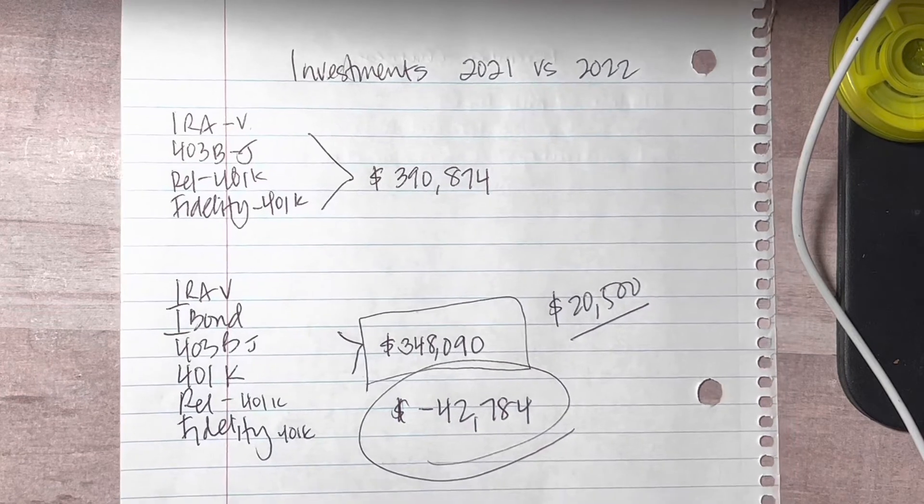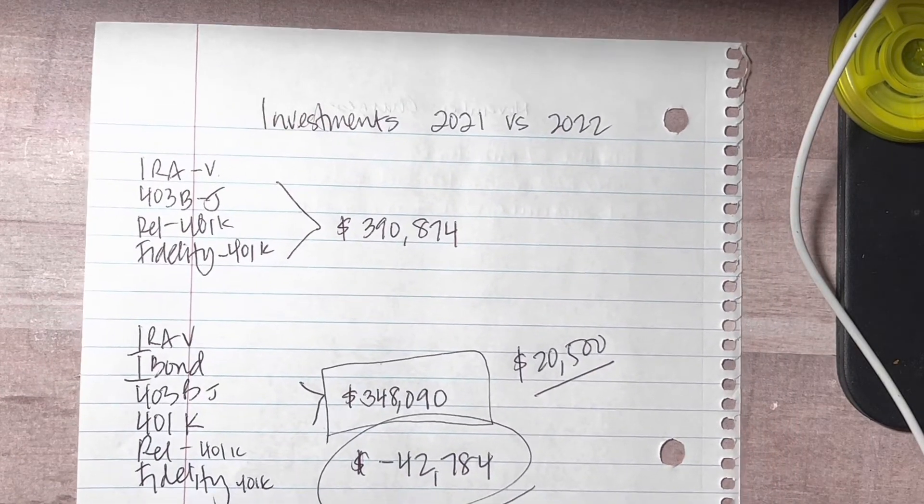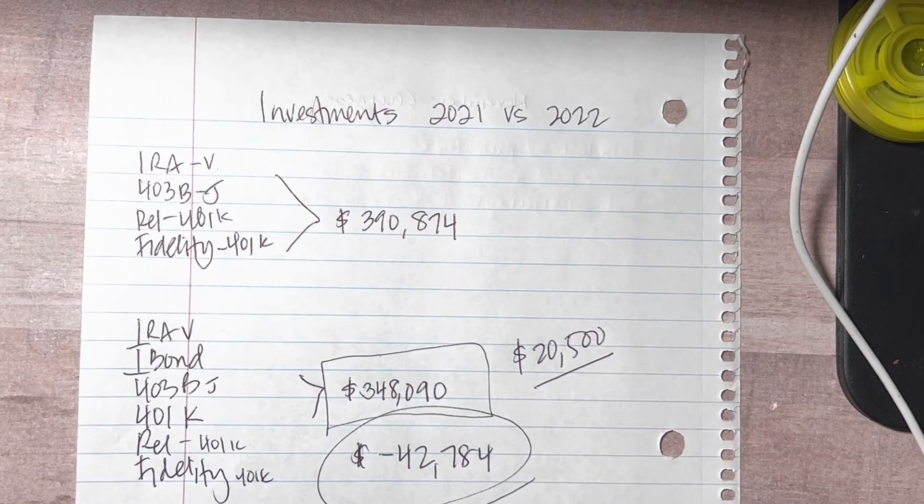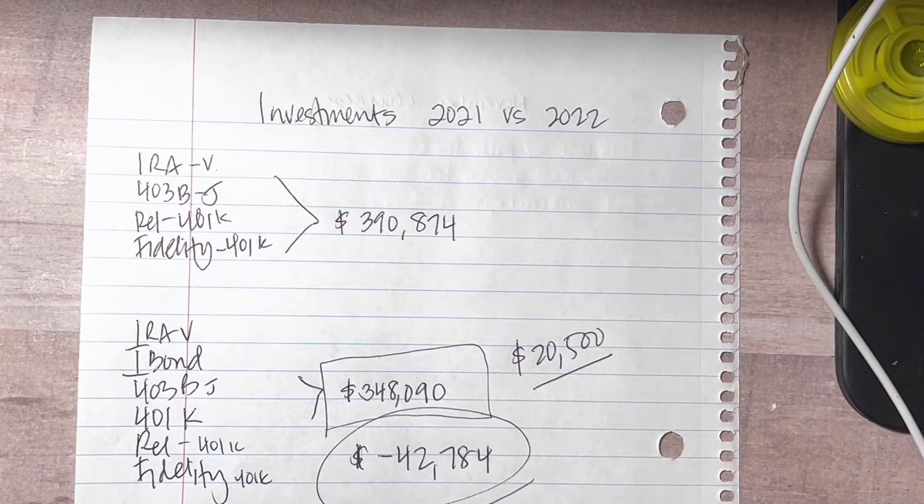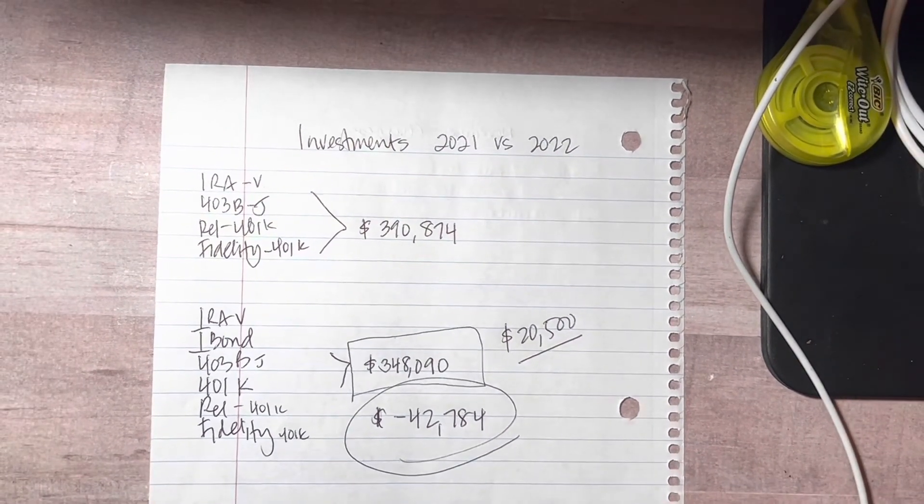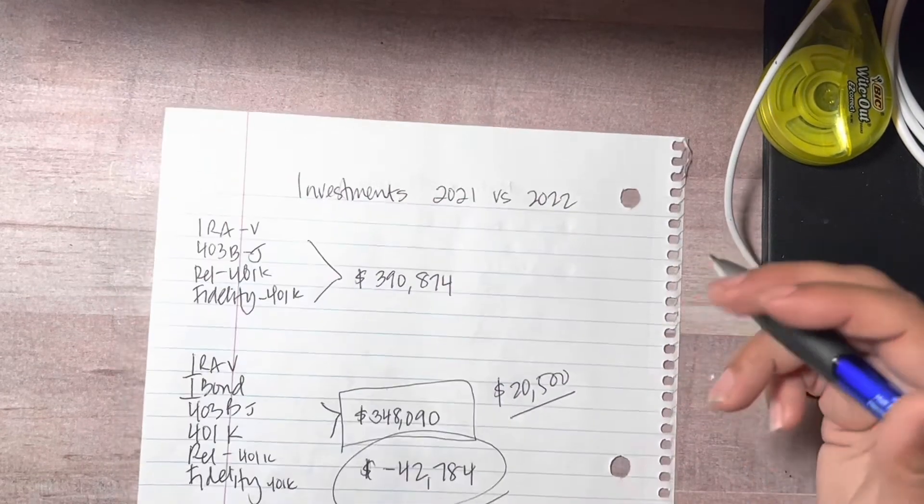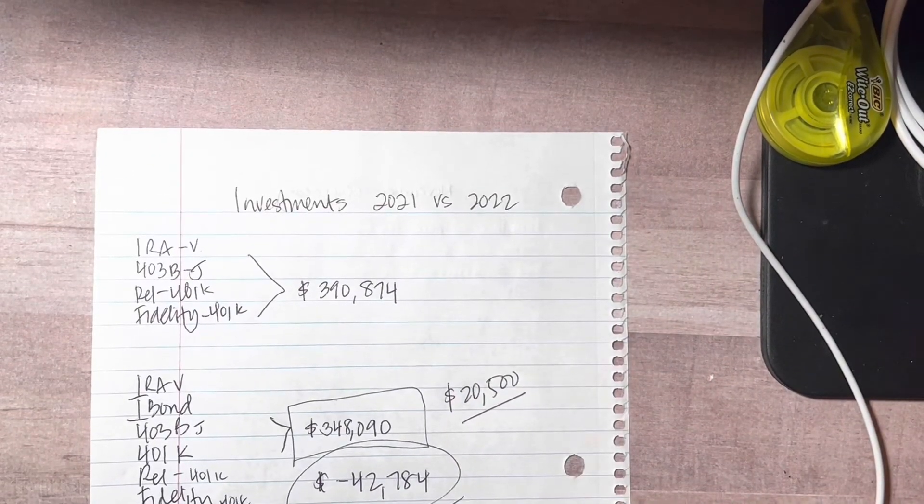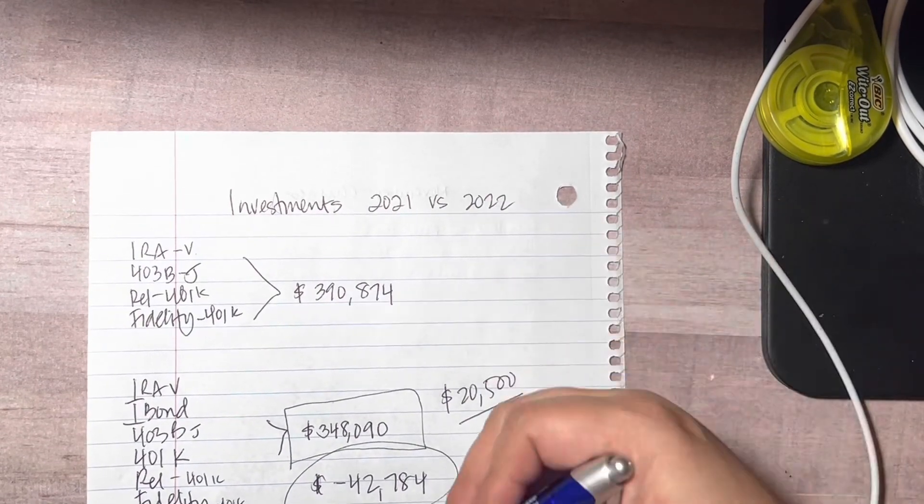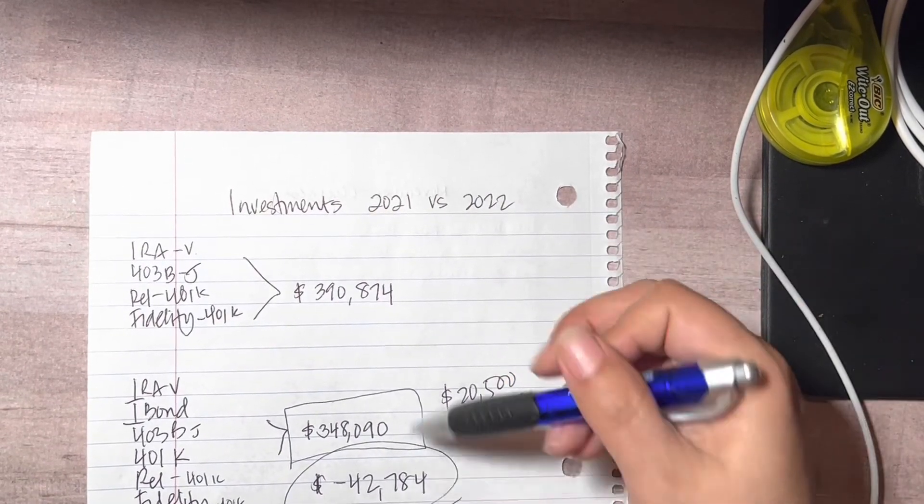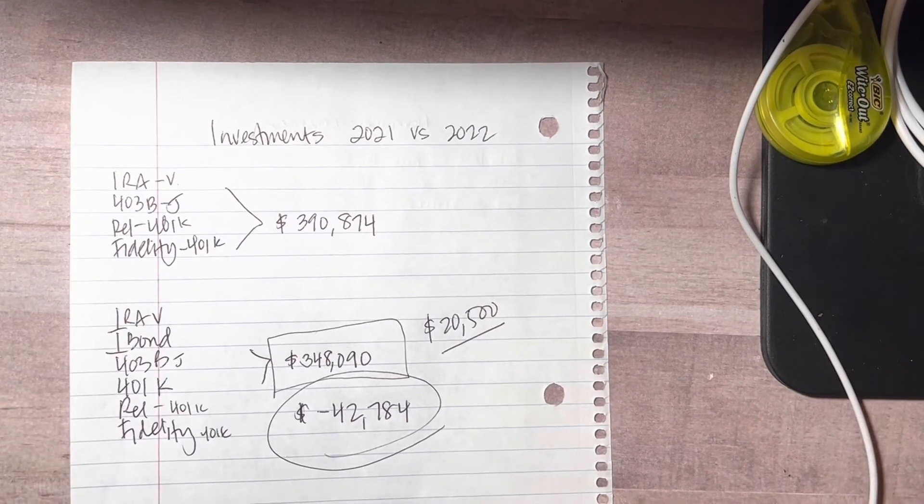I really believe in compound interest and believe that you buy when things are low, and eventually with compound interest it'll grow and we'll be fine. So that is today's prompt: investments 2021 versus 2022 and what the differences are. Let me know down below - is this something that you look at? Did you make any major changes? Have you seen a major dip in your investments? Comment down below and let me know.